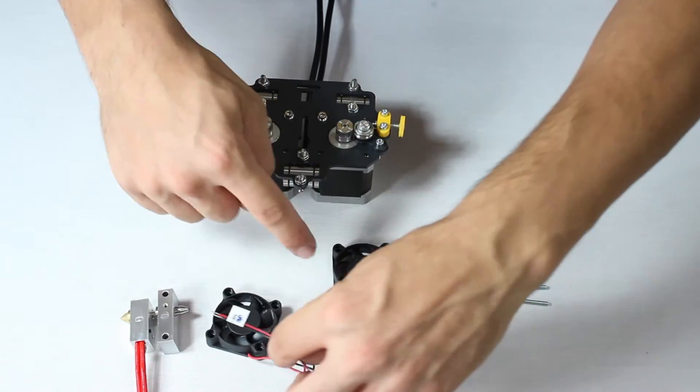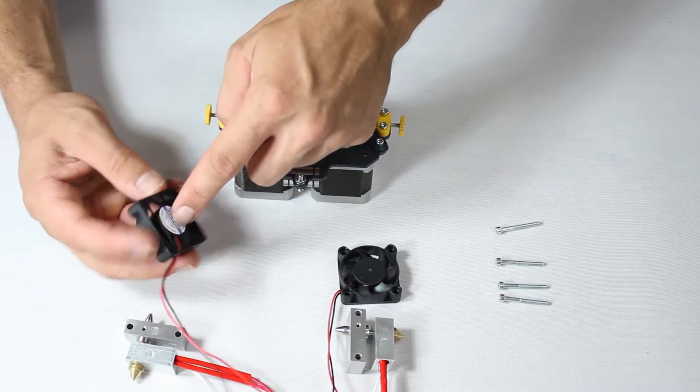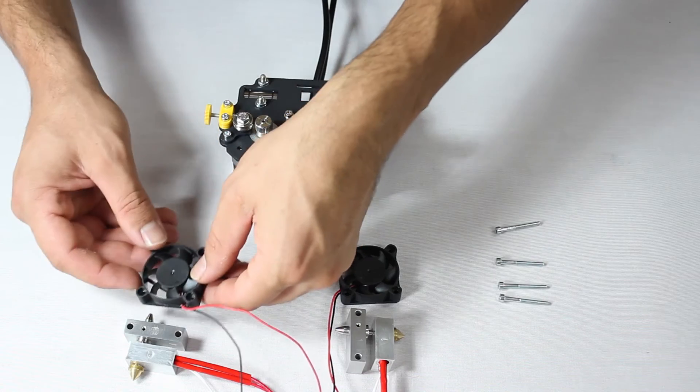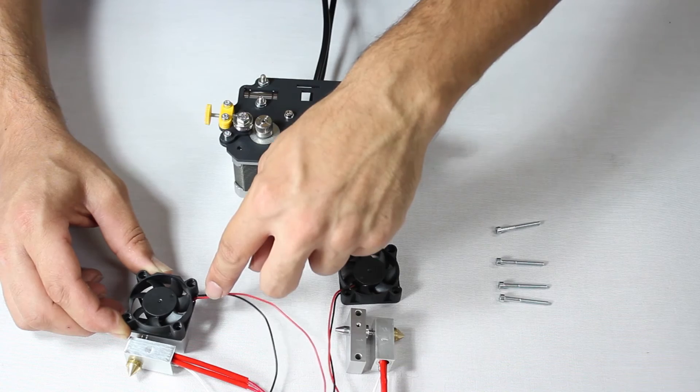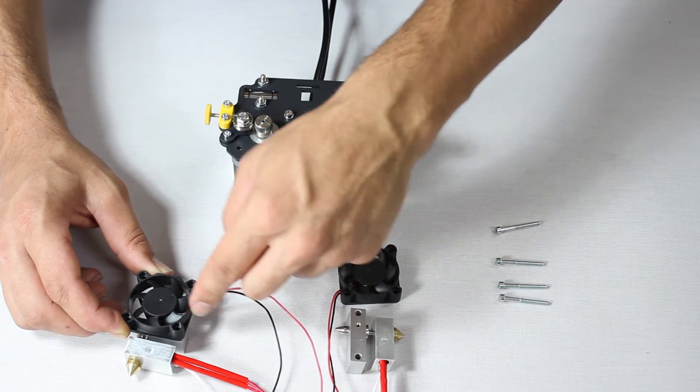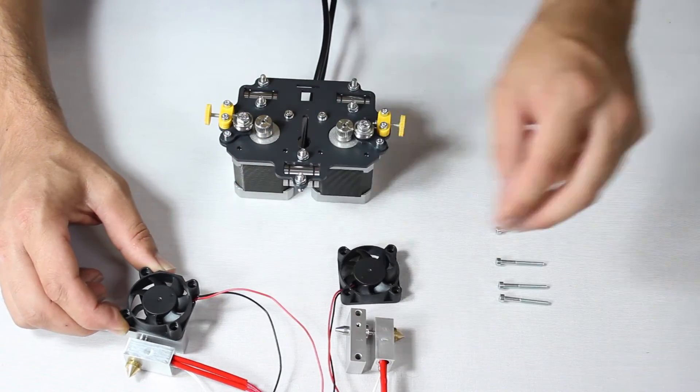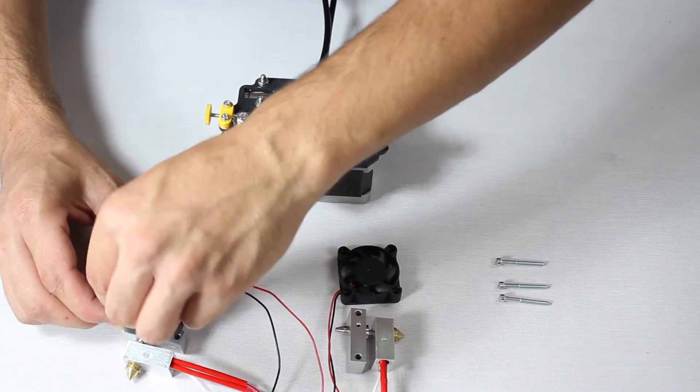Now, take note of how the extruder end is oriented. See that the side branded with a number is facing up, and notice which way the wiring is facing. Notice how the fan we see here has the label facing down. Also see how the wiring is oriented.